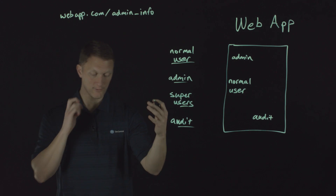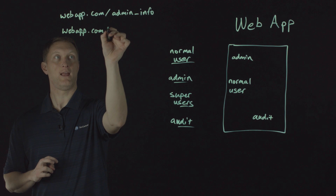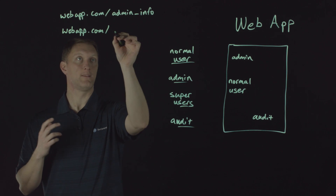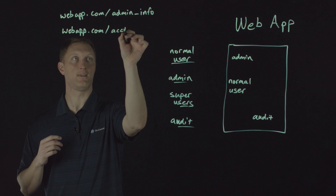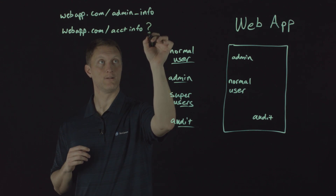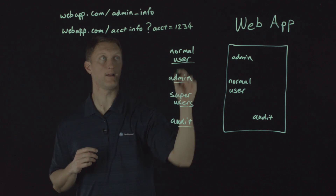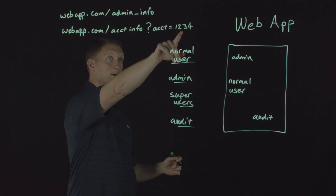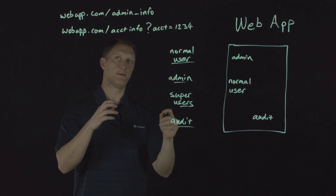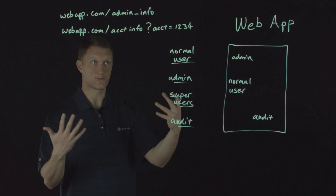Another example: someone tries to change query parameters. They go to webappdot-com/account-info and add a parameter like account=1234. If I am a user who does not own account 1234 and I type that in and can get to it, that's a problem — you've got broken access controls. Those are a couple of ways broken access control can manifest itself.